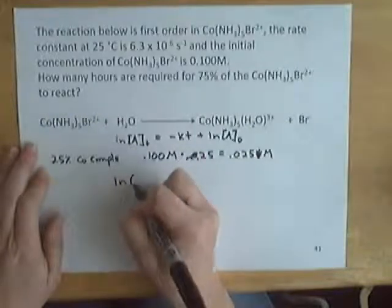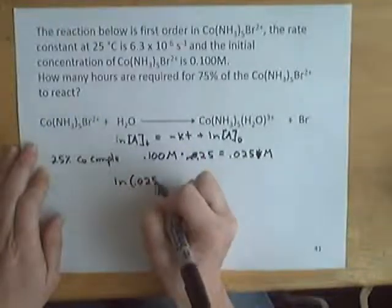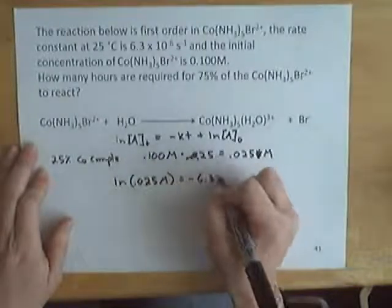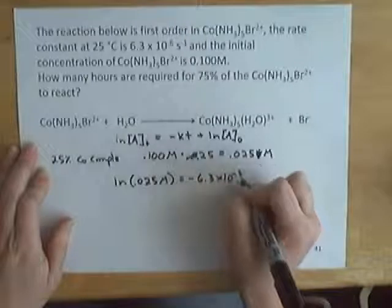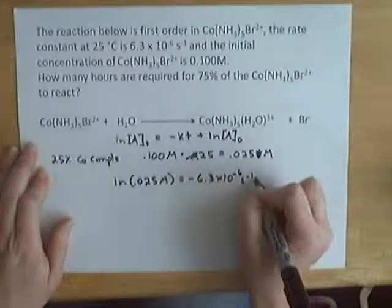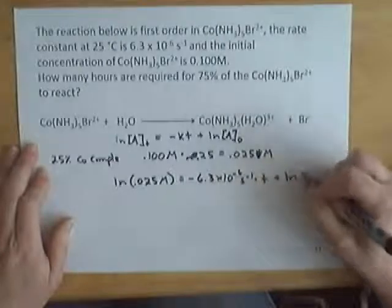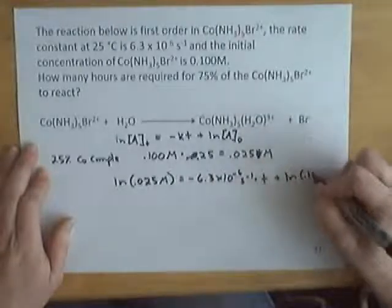So our final concentration is 0.025 molar. We have a rate constant, same as in the last problem, times time plus natural log of our initial concentration, 0.100 molar.